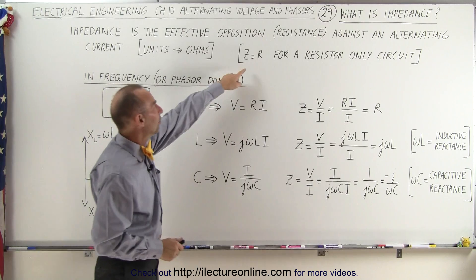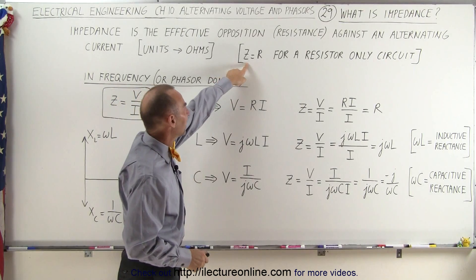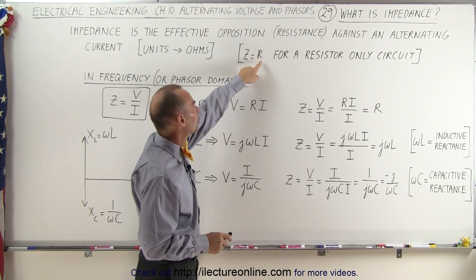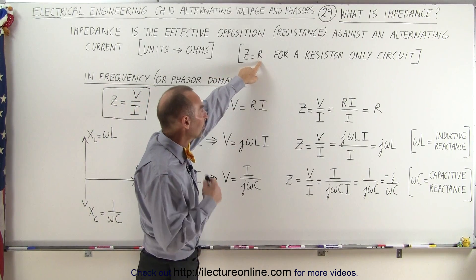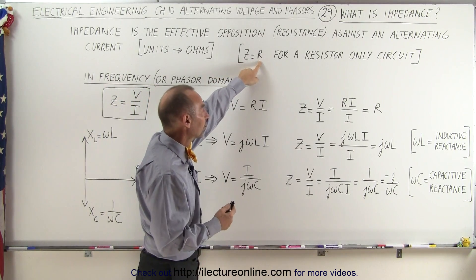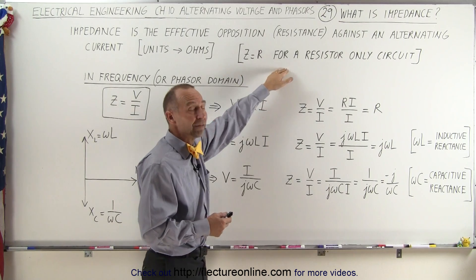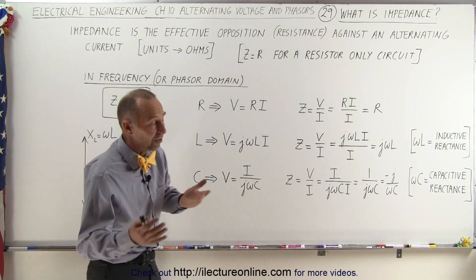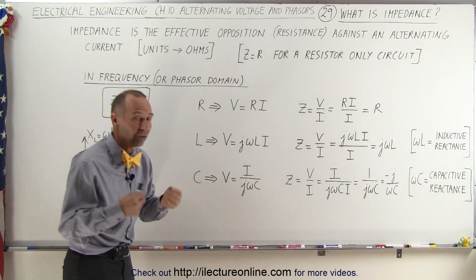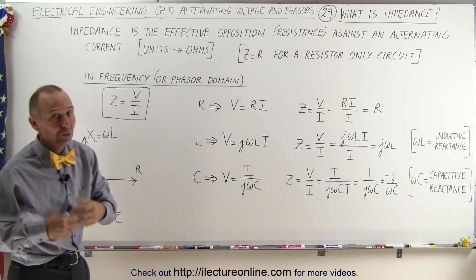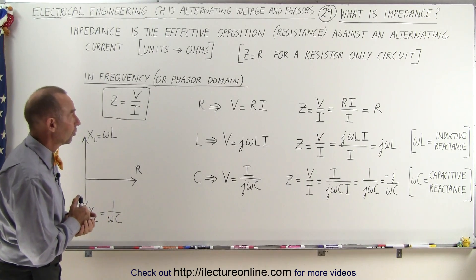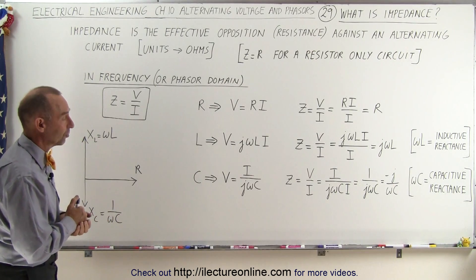Now the impedance, which we use the letter Z for, is equal to R, the resistance of a circuit, if all you have in the circuit is resistors. So impedance and resistance are the same if the only components in the circuit are resistors.